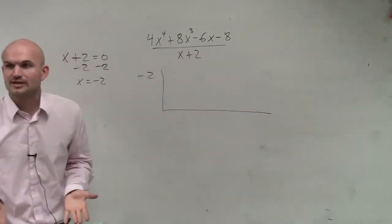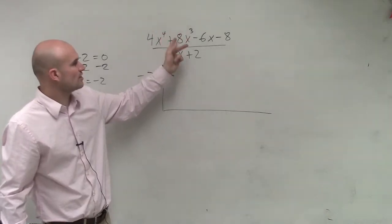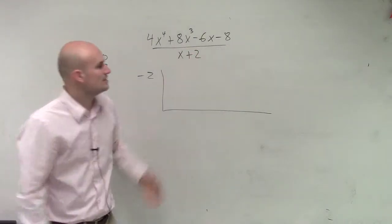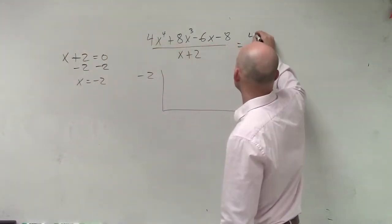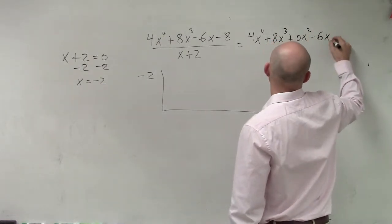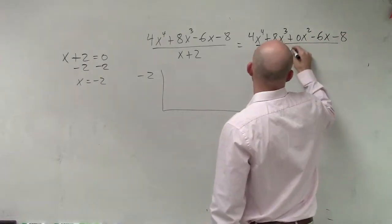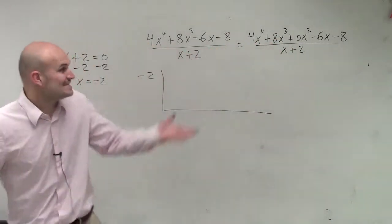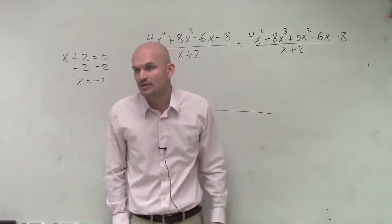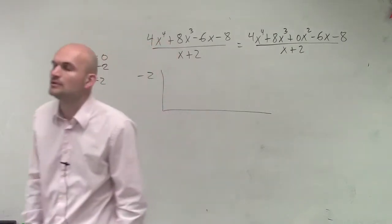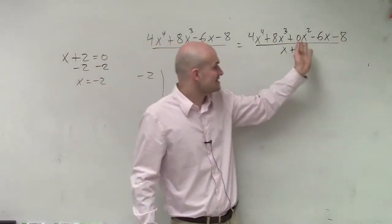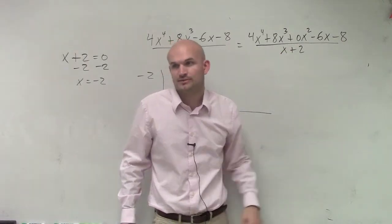Now, here's where it gets confusing. We say 4x to the fourth plus 8x cubed, and then we go to minus 6x. There's no x squared, right? So this problem can be rewritten as this: 4x to the fourth plus 8x cubed plus 0x squared minus 6x minus 8 divided by x plus 2. What? That's the exact same thing. Because what's 0 times x squared? Zero. But you've got to make sure we put in that place value. We have to have that place value. You have to have the order. We have to have descending order. So since there's no x squared, we have to have that place value in there.